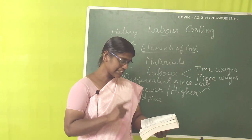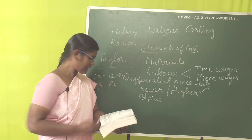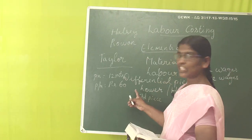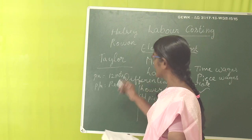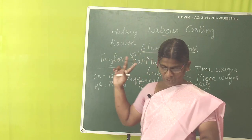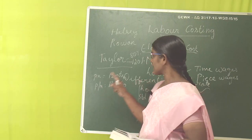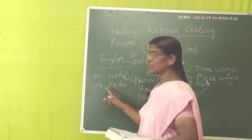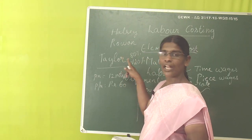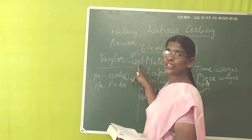The standard time per unit is 12 minutes per unit, and the standard rate per hour is rupees 60. The differentials to be used are 80% and 120%. So we follow two different piece rate systems: 80% of the piece rate and 120% of the piece rate. For example, if the piece rate is 10 rupees, under 80% we give only 8 rupees per piece, and under 120% we give 12 rupees per piece.